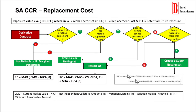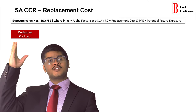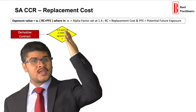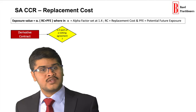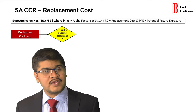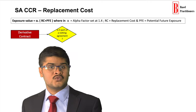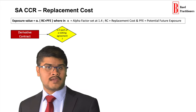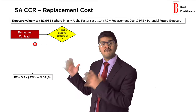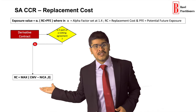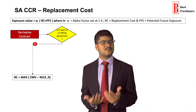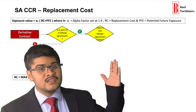Let us understand the replacement cost computation in detail. Let us start with the derivative contract. The first step is to check whether it is subjected to netting or not. If there is a master netting agreement in place, those contracts are referred to as netable contracts and otherwise non-netable contracts. If it is non-netable, a simple RC formula is used.